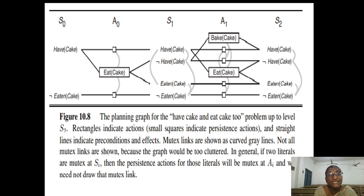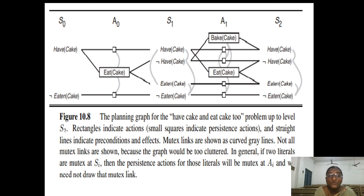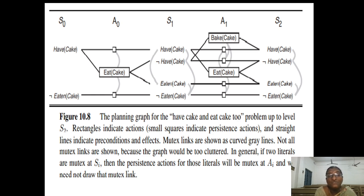If you did not eat the cake and apply no action, 'not eaten(cake)' remains as is. If you eat the cake, you have 'eaten(cake)'. In the planning graph diagram, you can see some grey curved lines. These are mutex links — mutually exclusive links. Not all mutex links are shown, only some of them. Regular rectangles represent actions, and straight lines indicate preconditions and effects.